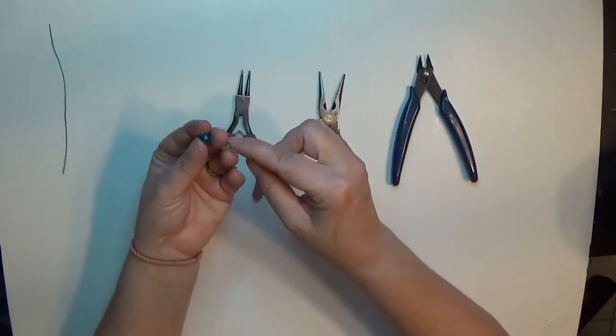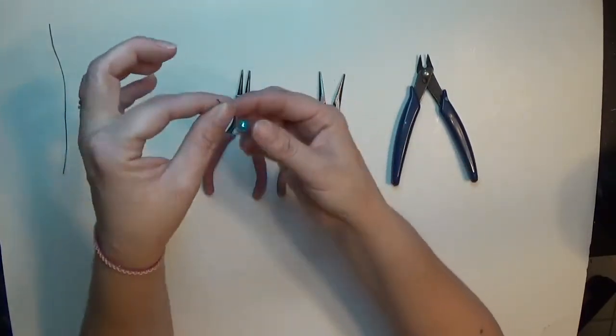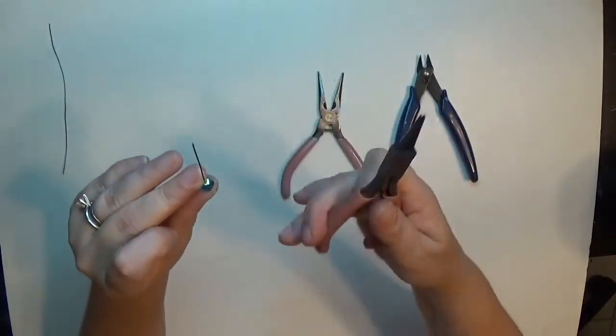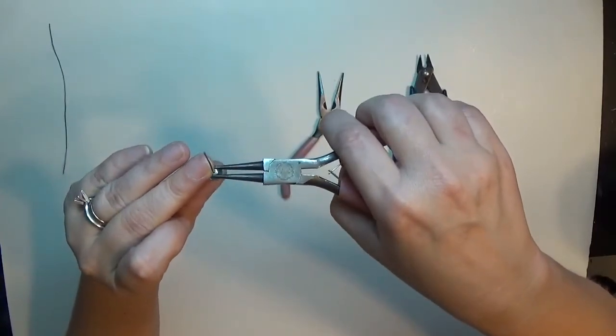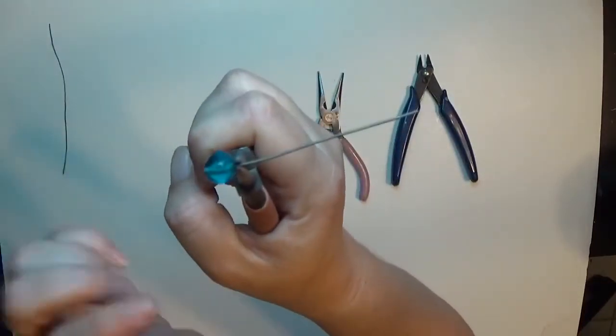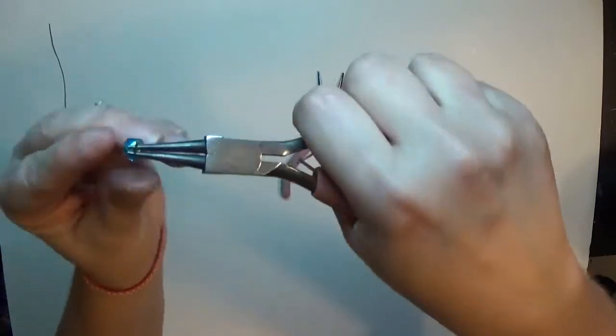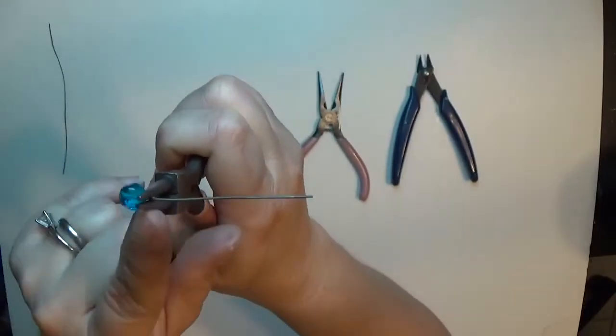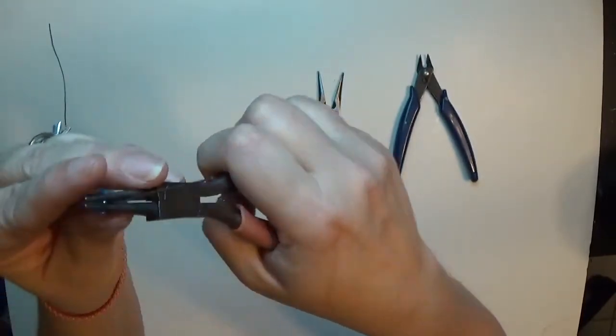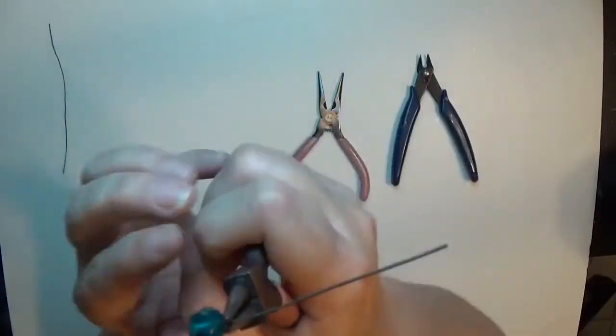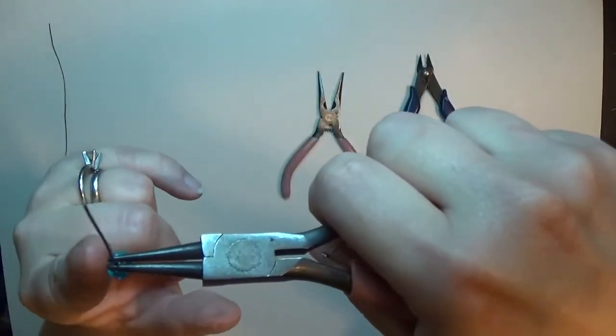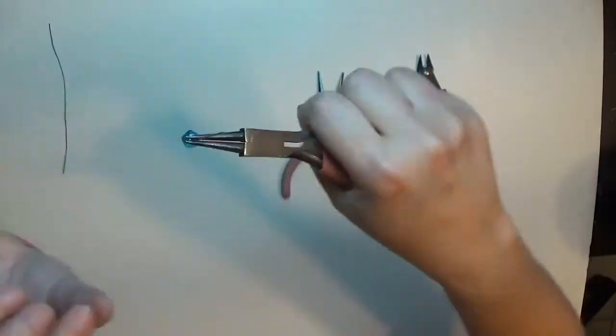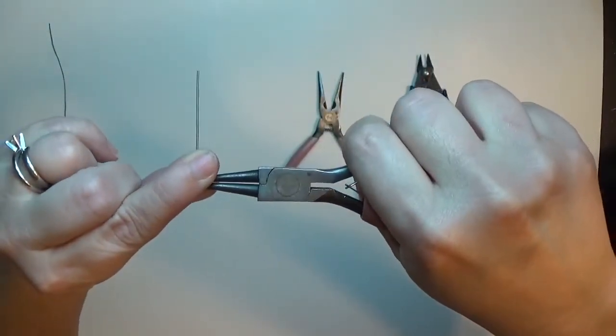Let me go ahead and get to it. So to make a wrap loop you're going to start by threading your bead onto your head pin so that it is flush. Once you get it flush, take your round nose pliers and put them here against your bead. Now the farther up on your round nose pliers you put it, the more space that you're going to have for your wrapping in there. So I tend to put it pretty close to the edge, the front of the pliers. Once I do that, I bend this at a 90 degree angle.